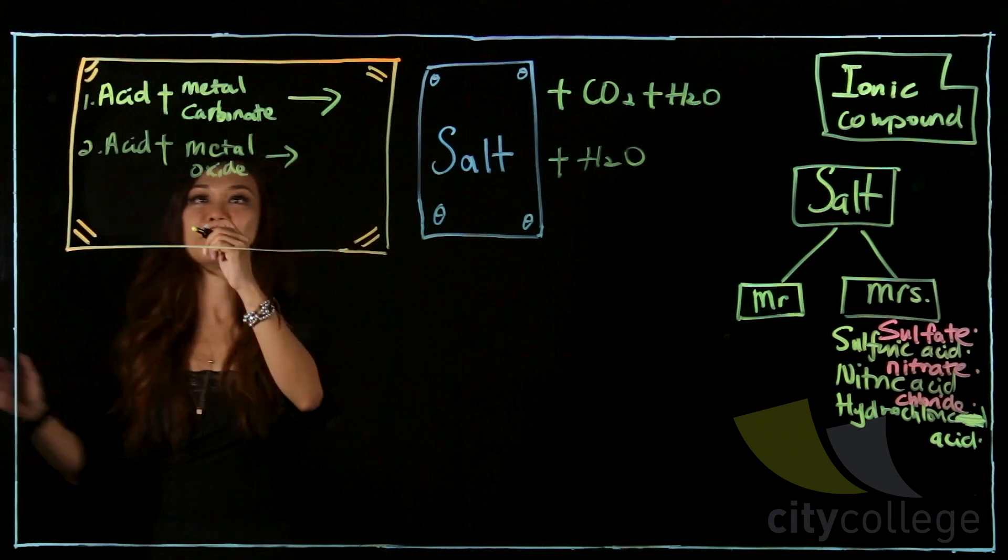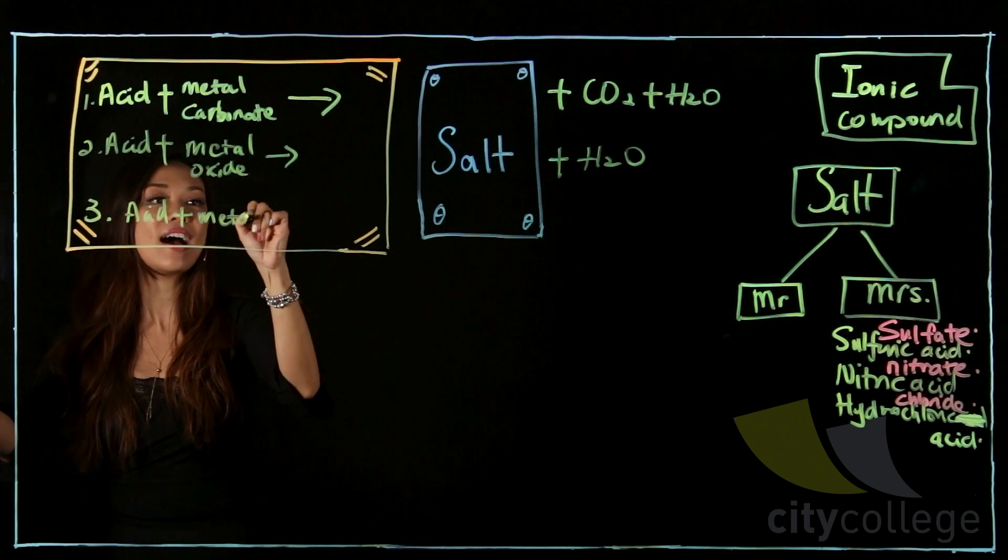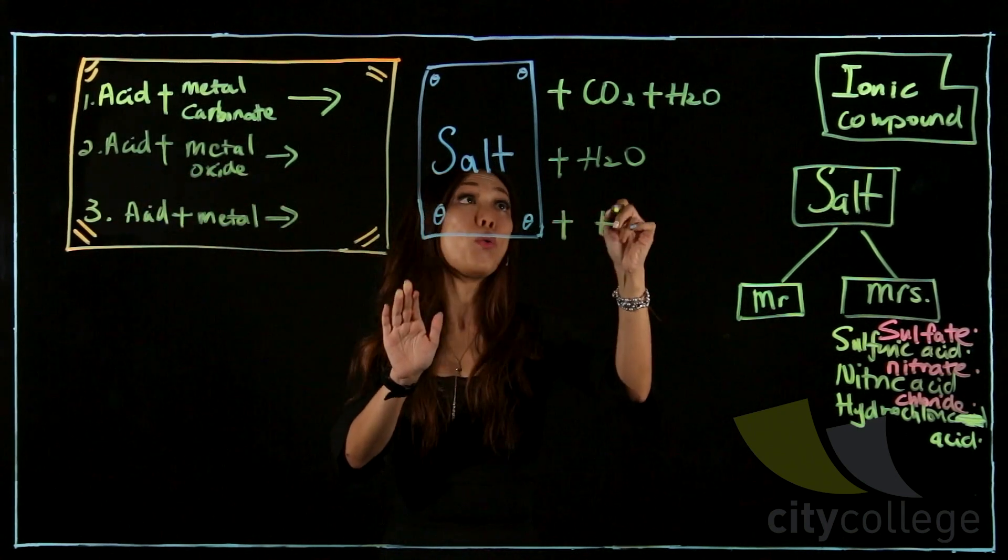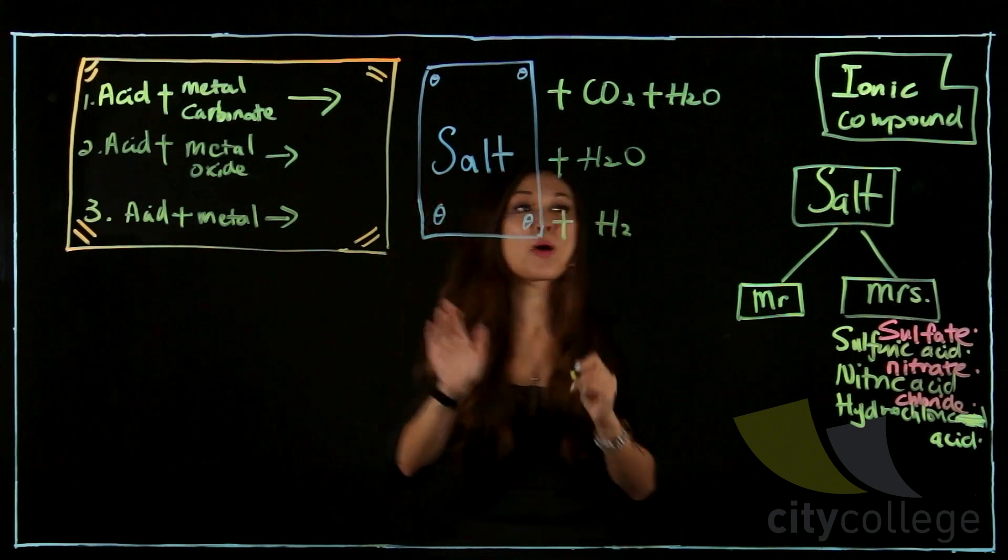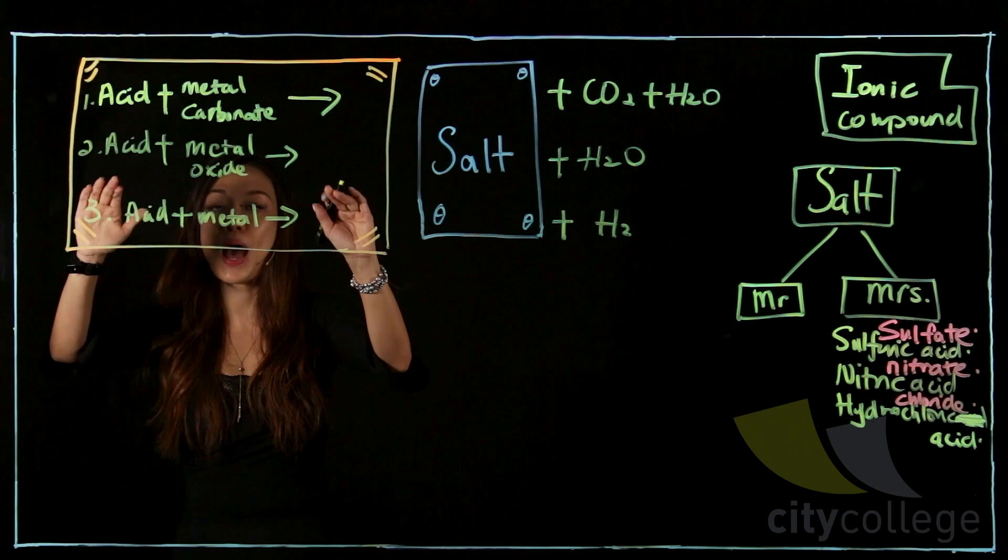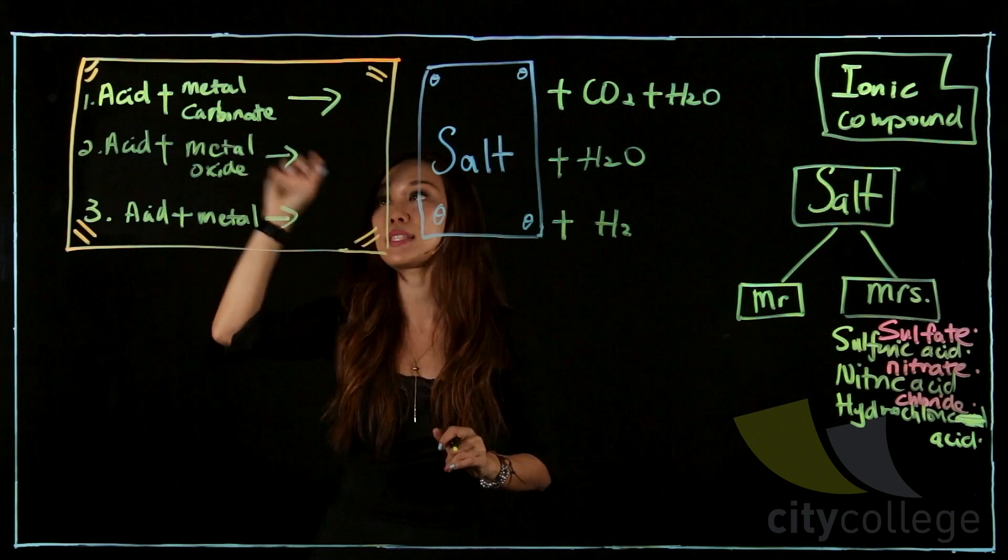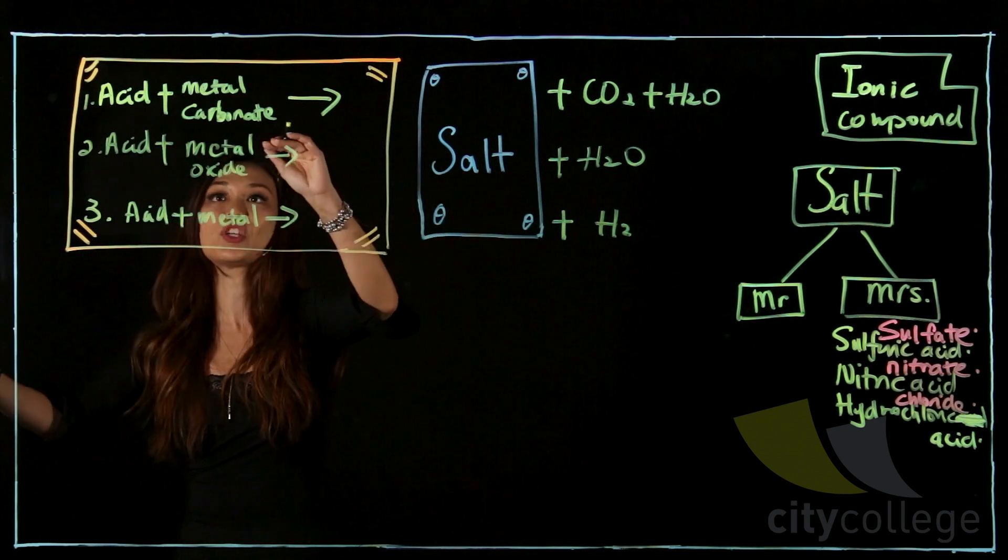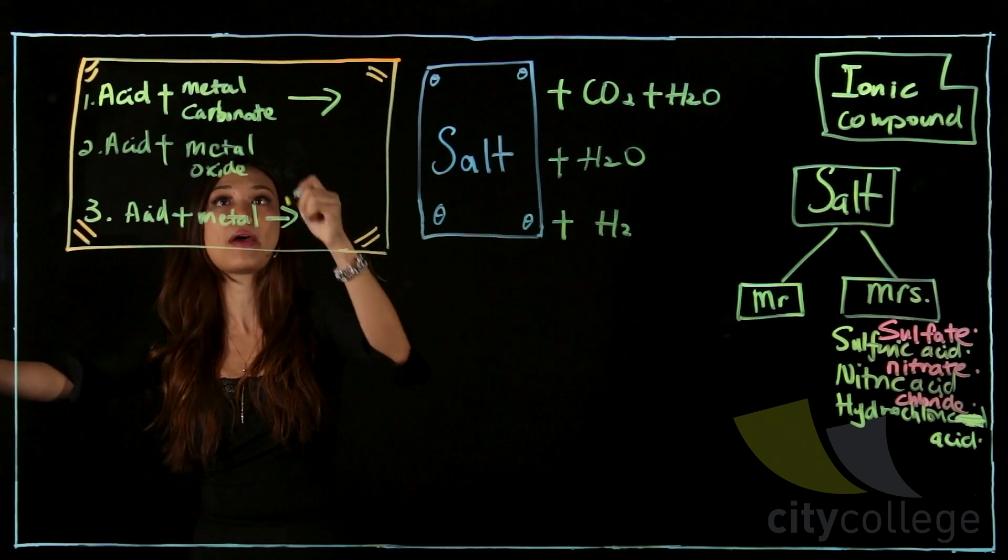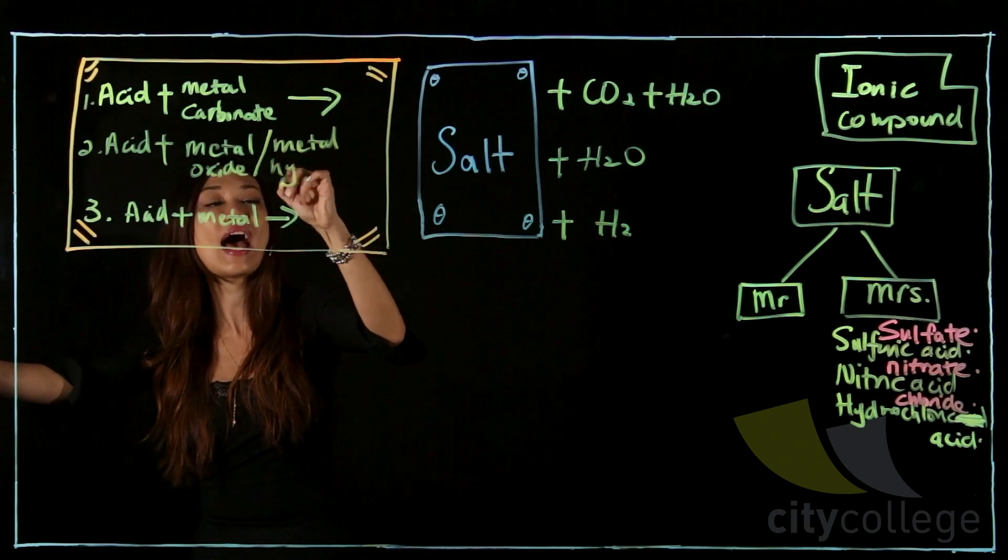Secondly, we have acid plus a metal oxide will also produce a salt and water. Next, coming up, acid plus metal will give you salt plus hydrogen gas. Now, come back to here, this part. Acid plus metal oxide, you must remember, I will include one more substance. Instead of just metal oxide alone, I want you right now to remember, they will also include metal hydroxide.